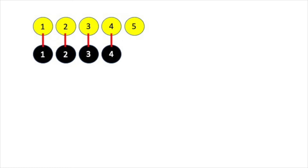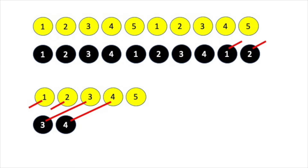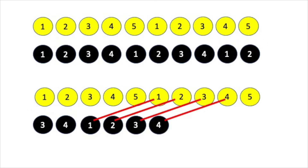So in the first turn, you can see that the numbers just line up perfectly. Now on the second turn, you can see that the black tokens begin to go a little bit out of alignment with the yellow tokens. Another turn, and the black tokens are more out of line. And finally, a fourth turn — and you can see how the black tokens will continue to be out of line with the yellow tokens as time moves on.